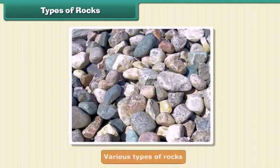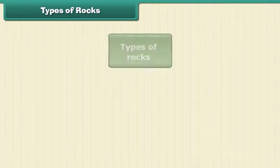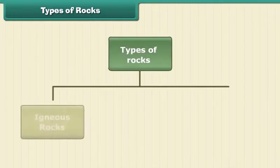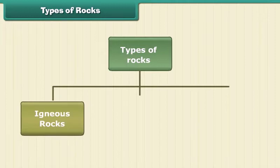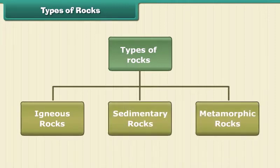We now know that the earth's crust is made up of various types of rocks. The three major types are igneous rocks, sedimentary rocks, and metamorphic rocks. Let's study about them in detail.